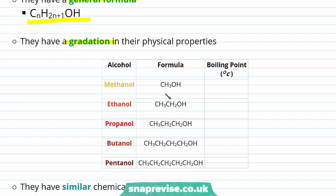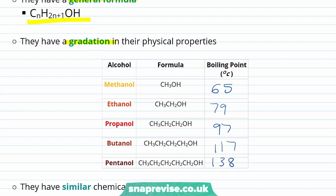Methanol, which has only one carbon, has a boiling point of 65 degrees Celsius. Ethanol, with two carbons, has a boiling point of 79 degrees Celsius. Propanol, with three carbons, has a boiling point of 97 degrees Celsius. Butanol, 117 degrees Celsius, and pentanol, 138 degrees Celsius.